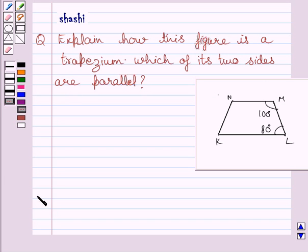Let us now start with the solution. Now, we are given that angle M is equal to 100 degrees and angle L is equal to 80 degrees.